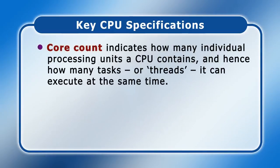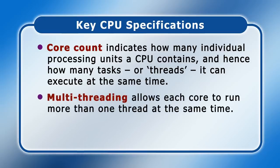Core count indicates how many individual processing units a CPU contains, and hence how many tasks or threads it can execute at the same time. So the more cores a processor has, the higher its potential performance. Parallel processing is enhanced further if a CPU supports multi-threading, which uses virtualization to allow each single core to run more than one thread at the same time.